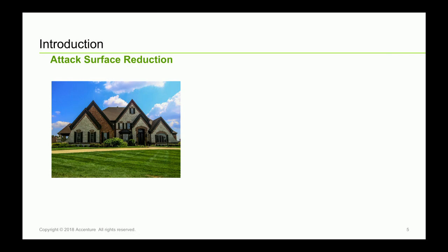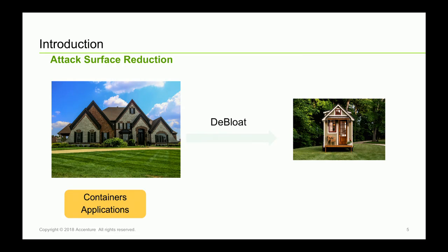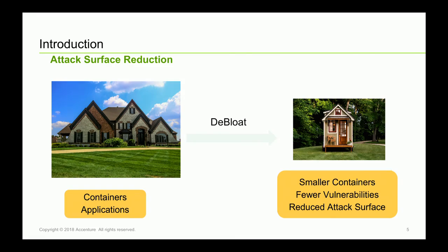To be more abstract: imagine you're a couple living in a large mansion with lots of windows and doors — that's a lot of entry points for a burglar. Unfortunately, that's the state of containers today. There are a lot of unnecessary pieces. We want to de-bloat this house — in this case the container — and put you in a tiny house that suits your needs. By reducing the size of containers, you'll have fewer entry points, which means fewer vulnerabilities. Less code, less bugs, less vulnerability.